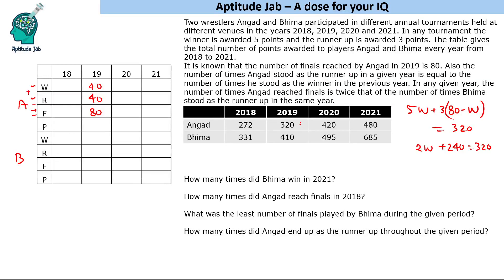The chain condition states that the number of times Angad was runner-up in a given year equals his wins in the previous year. Since he had 40 runner-ups in 2019, he had 40 wins in 2018. The Bhim relationship tells us that Angad's finals equals twice Bhim's runner-ups in the same year. So if Angad reached 80 finals, Bhim was runner-up 40 times. Whatever value you get for Angad's finals, Bhim's runner-ups will be half of that.